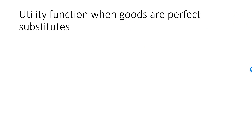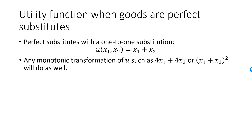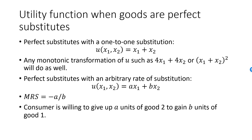Here is a summary of this important result. Two goods that are perfect substitutes with a one-to-one rate of substitution can be represented by the simple utility function u = x1 plus x2. Any monotonic transformation also represents these preferences. If the rate of substitution is not one-to-one, such preferences can always be represented by a linear utility function u = ax1 plus bx2. The MRS for such a utility function will be equal to minus a divided by b. One unit of good 1 is equivalent to a over b units of good 2, which is the same as saying b units of good 1 is equivalent to a units of good 2.